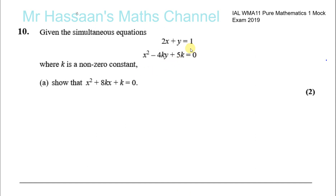Here we have a pair of simultaneous equations, where we have 2x plus y equals 1, which is a linear one, and x squared minus 4ky plus 5k equals 0, which is non-linear. We're told that k is a non-zero constant, and we've got to show that x squared plus 8kx plus k is equal to 0.